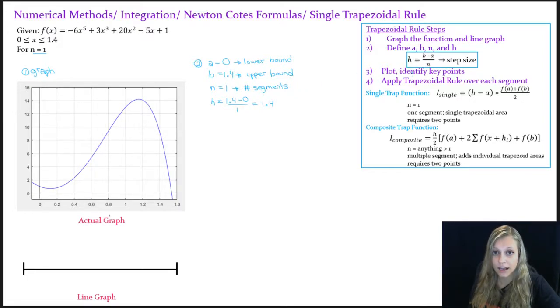The third thing I need to do is plot and identify key points. So the key points in this problem are only going to be our upper bound and our lower bound, since we only have one segment. So my lower bound on both graphs is right here at 0, and my upper bound is right here at 1.4. And since we only have one segment, this entire distance is going to be the single segment that we integrate over.